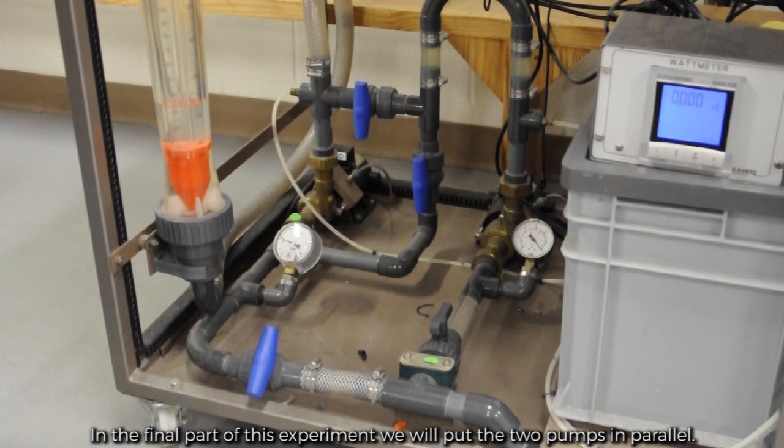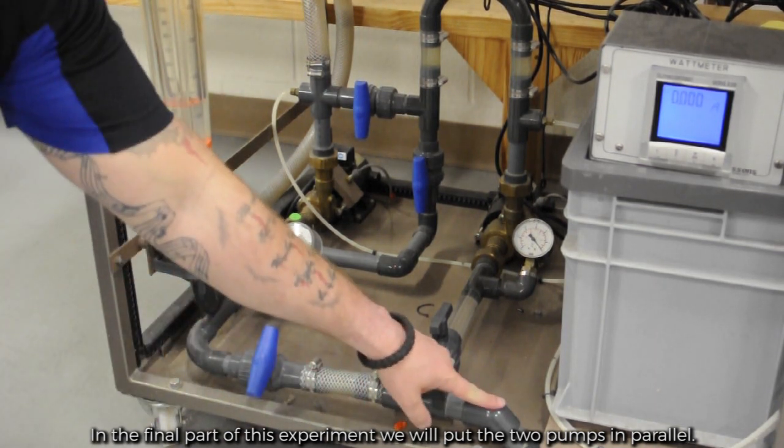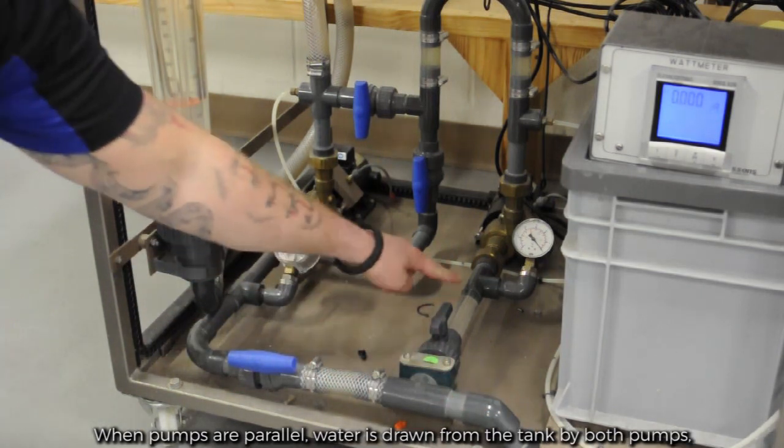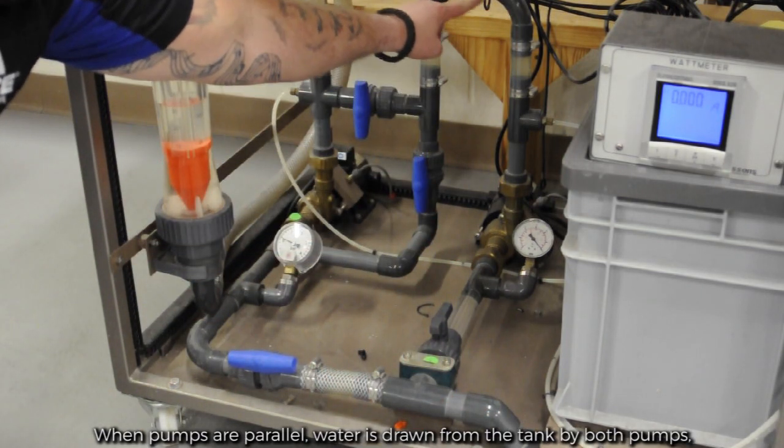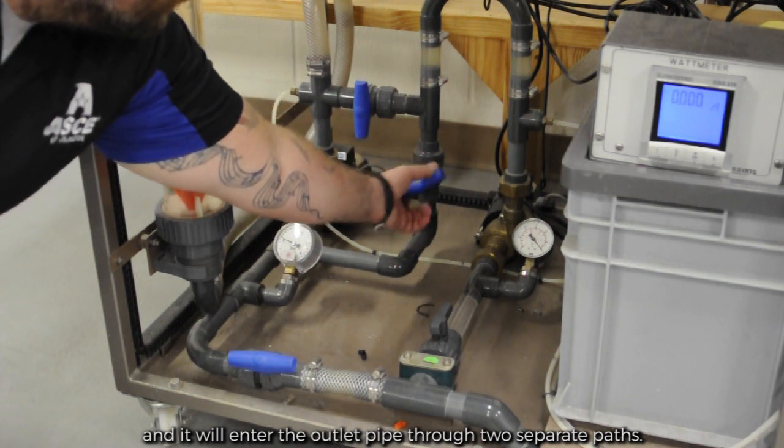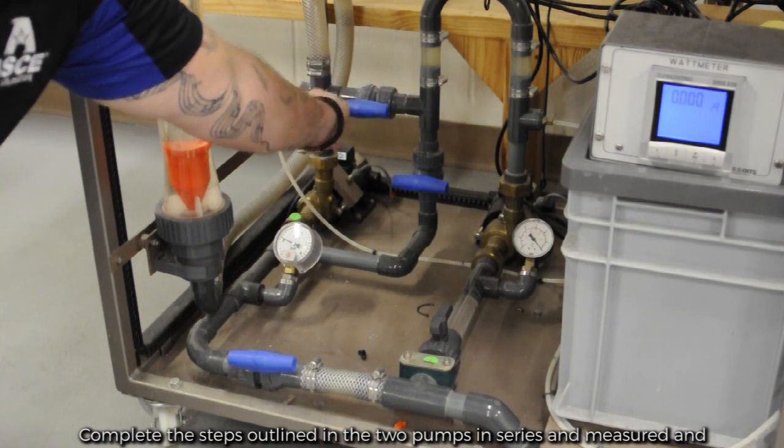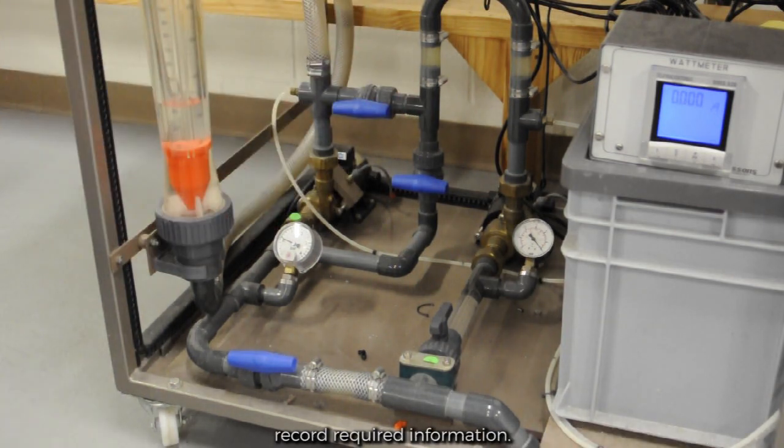In the final part of this experiment, we will put the two pumps in parallel. Watch this video or consult with your lab manual for this purpose. When pumps are in parallel, water is drawn from the tank by both pumps and will enter the outlet pipe through two separate paths. Complete the steps outlined in the two pumps in series and measure and record required information.